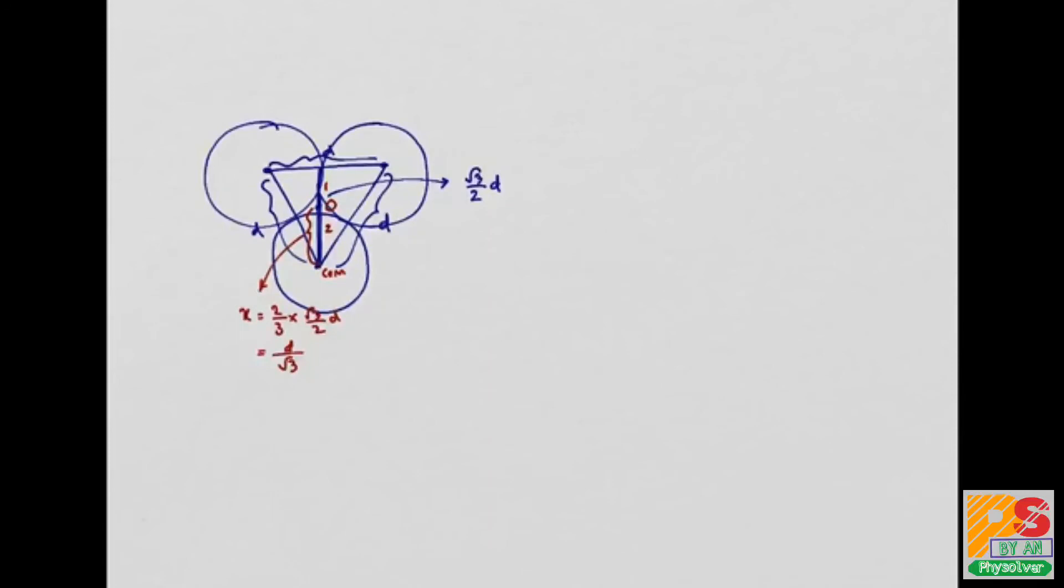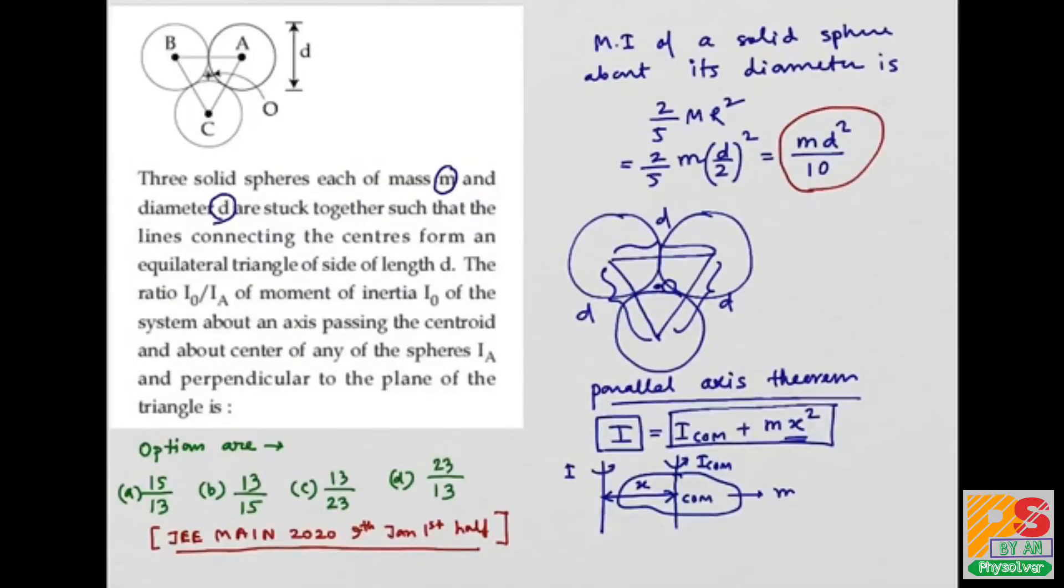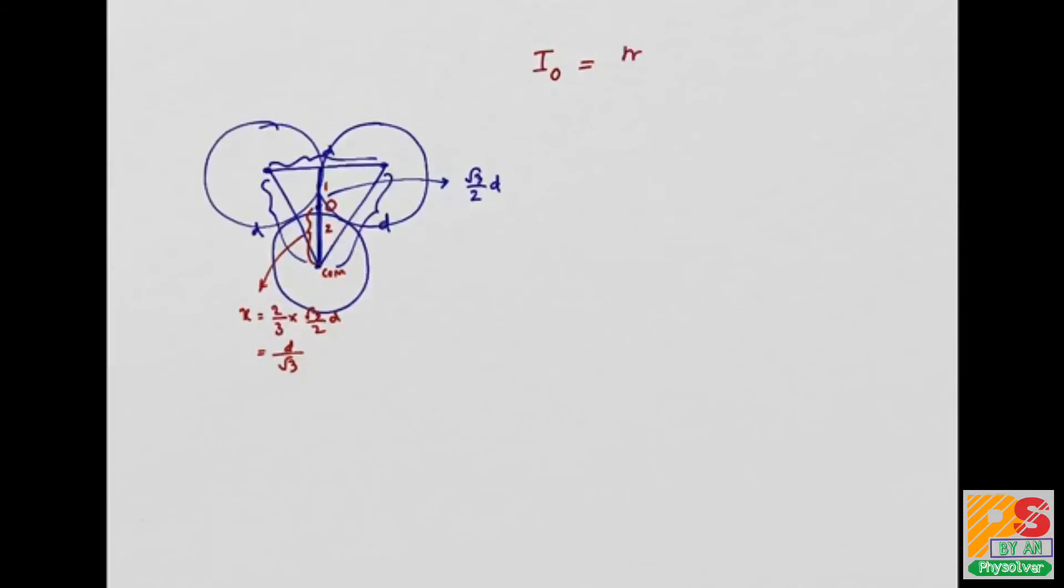Therefore I about O is, for a single sphere, I_COM is MD squared by 10 plus MX squared, where X is this distance D by root 3. So D by root 3 squared. Now this is for a single sphere. There are three spheres.